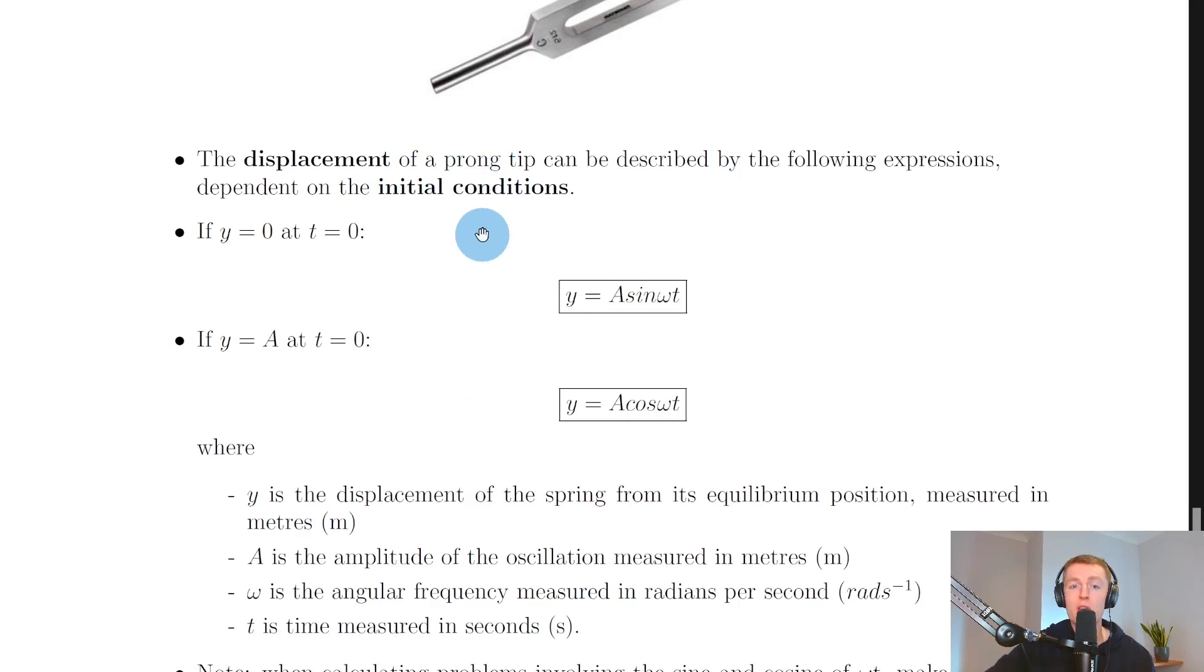What we mean by initial conditions is basically what's happening right at the start of the object's motion before it's actually started moving, so when time equals zero. You'll see we have initial conditions here and here where time equals zero.